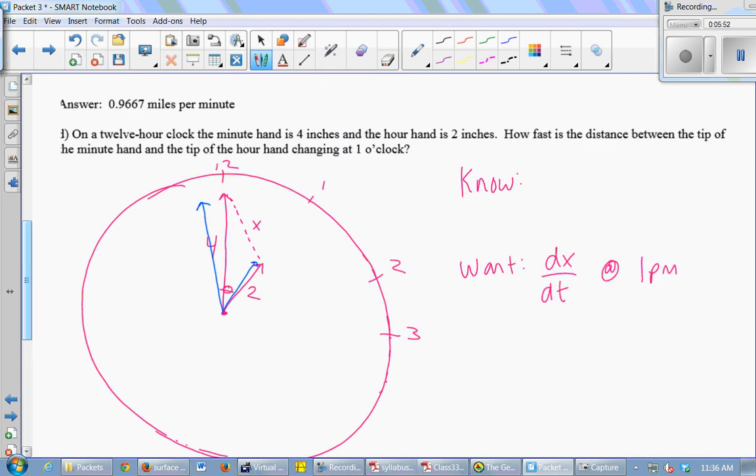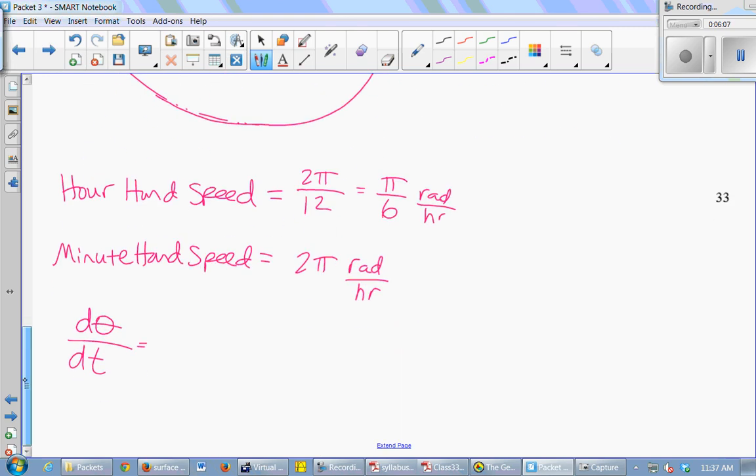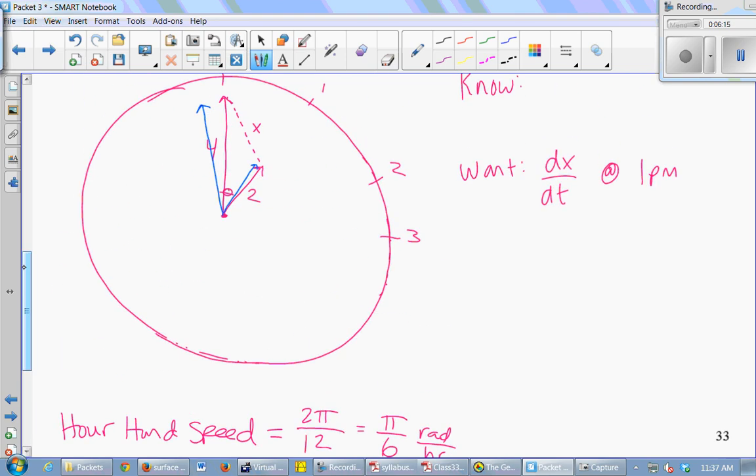So if I call this angle in here theta, then I know d(theta)/dt. I know that the speed at which that angle is changing is the difference between the speeds of the two hands. The angle is the difference between the two hands. This theta. Oh, it doesn't matter. Wherever. Right? Wherever it is. Because it's either between the two blue or the two pink. Right? As these hands move around the clock, theta is changing and it's measuring the angle between the two hands.